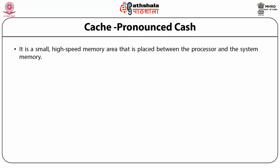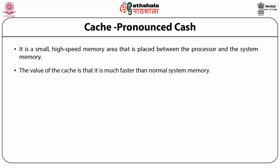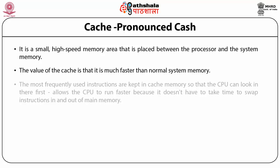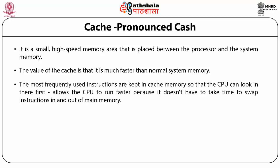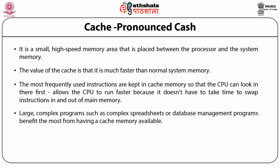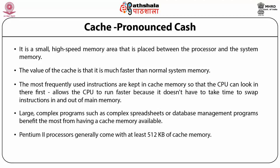Cache is a small, high-speed memory area placed between the processor and the system memory. The value of cache is that it is much faster than normal system memory. The most frequently used instructions are kept in cache memory so the CPU can look there first, allowing the CPU to run faster because it doesn't have to swap instructions in and out of main memory. Large, complex programs such as spreadsheets and databases benefit most from having cache memory available. Modern processors generally come with at least 512 KB of cache memory.